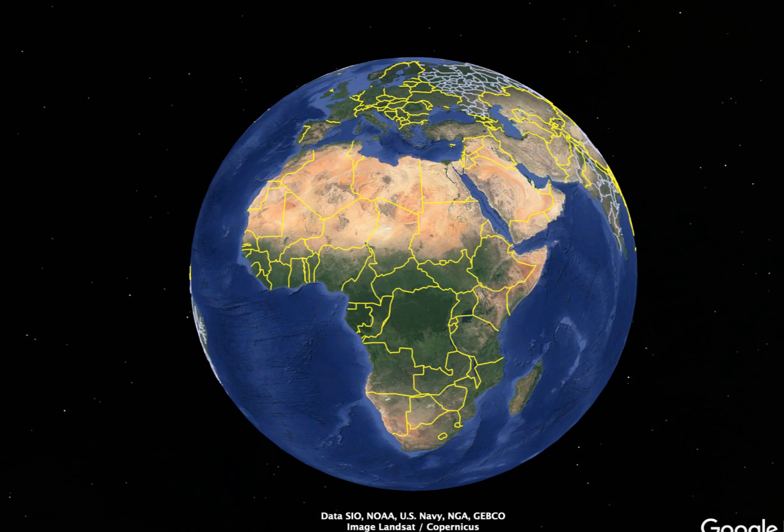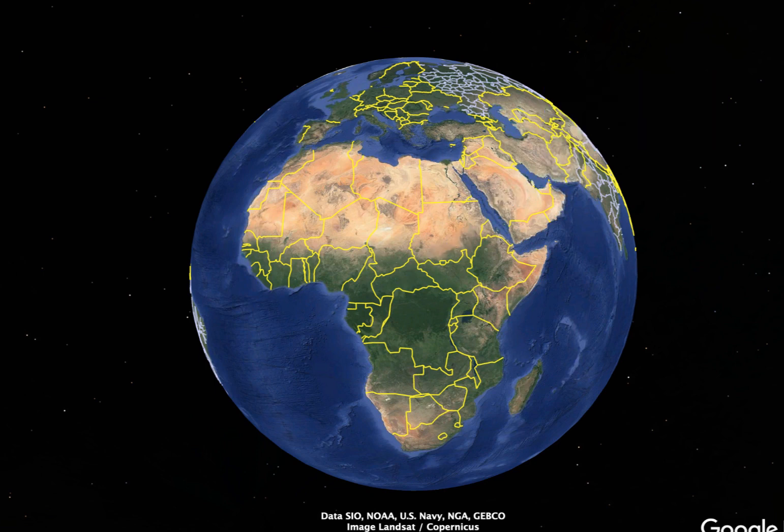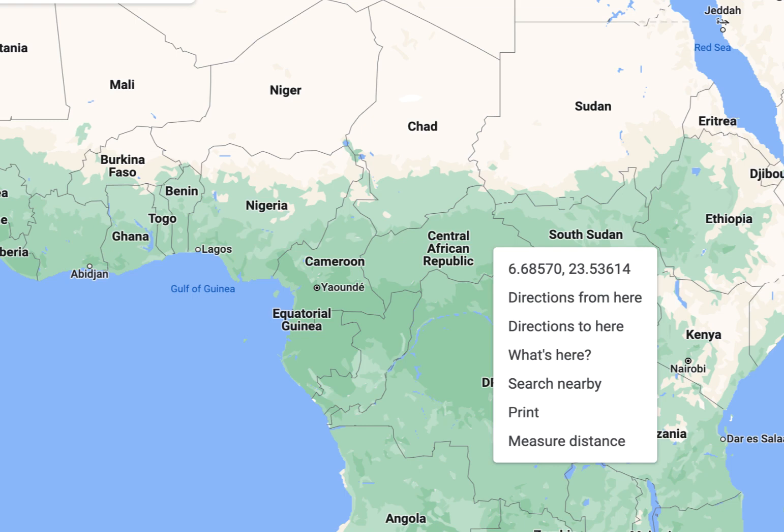This viewpoint puts the Central African Republic at the center of the globe. I could add a place marker to get the coordinates, but they'd be in the standard format and I'd have to convert them, which is no big deal. But since I'm lazy, I'll go to Google Maps to get the decimal numbers instead.